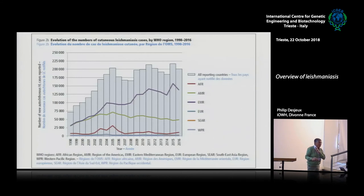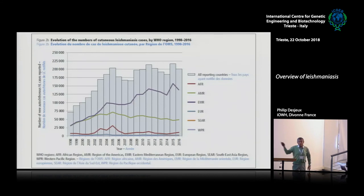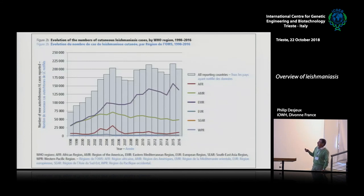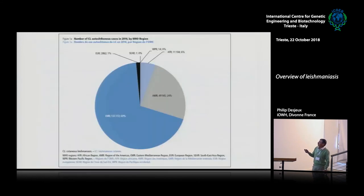The last two slides are for cutaneous Leishmaniasis. The major problem currently is Eastern Mediterranean countries — Iraq, Iran, Afghanistan — all countries with civil war, instability, and difficulty maintaining the healthcare situation. Afghanistan has 35,000 cases, Syria 50,000 cases. Yemen is also now increasing because of the war. You see the correlation between political instability and cutaneous Leishmaniasis. Clearly, the Eastern Mediterranean countries have a huge proportion of CL cases worldwide.